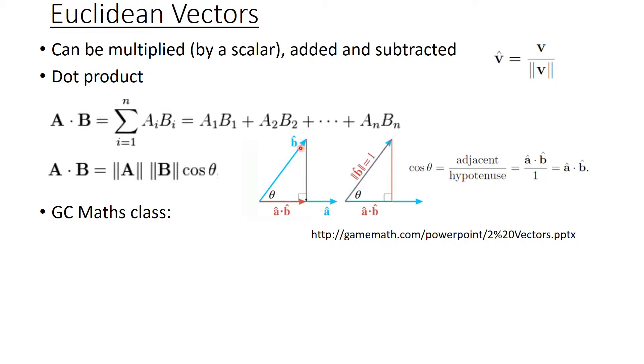Vectors can be multiplied by a scalar quantity. They can be added and subtracted. You can normalize vectors by dividing by their magnitude. There's a lot of vector arithmetic. So for example, the dot product is the product of the components of the different vectors. It's closely related to trigonometry. So hence, these two forms are equivalent.